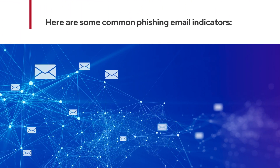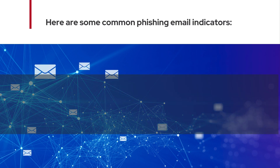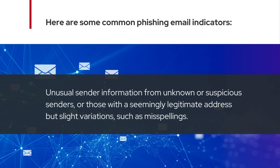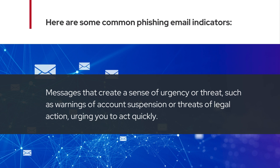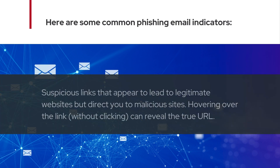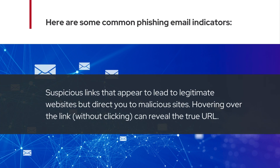Here are some common phishing email indicators. Unusual sender information from unknown or suspicious senders, or those with a seemingly legitimate address but slight variations such as misspellings. Messages that create a sense of urgency or threat, such as warnings of account suspension or threats of legal action, urging you to act quickly. Suspicious links that appear to lead to legitimate websites but direct you to malicious sites — hovering over the link without clicking can reveal the true URL.